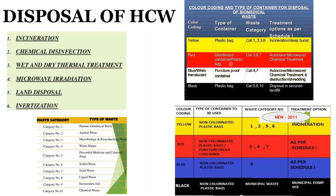The red plastic bag holds categories 3, 6, and 7, treated by autoclave, microwave, or chemical treatment. The blue or white puncture-proof container holds category 4 (waste sharps) and category 7 (solid waste) — treated by autoclave, microwave, chemical treatment, and shredding (needles are shredded before disposal). The black plastic bag holds categories 5, 9, and 10, disposed of in a secured landfill.